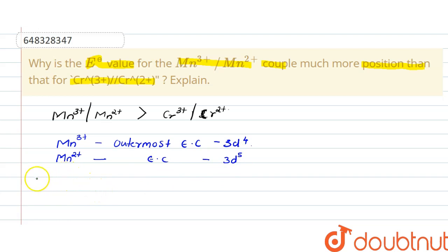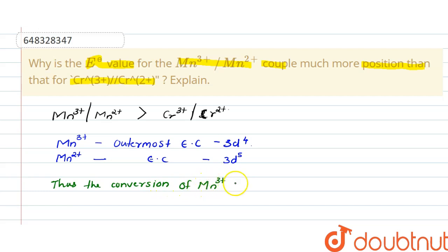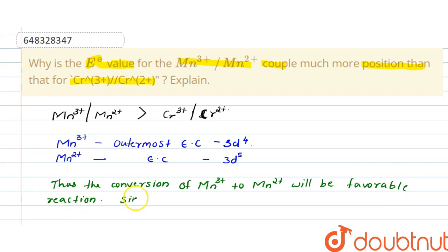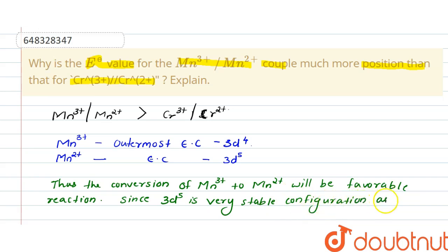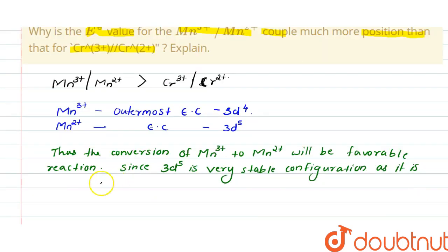The conversion of Mn³⁺ to Mn²⁺ will be a favorable reaction, since 3d⁵ is a very stable configuration, as it is a half-filled configuration.